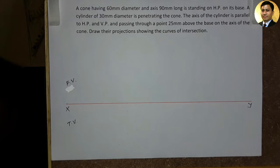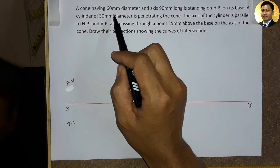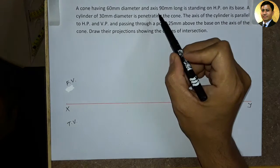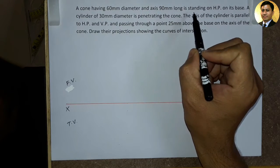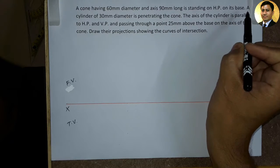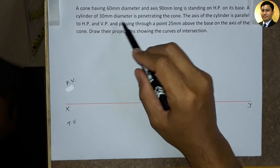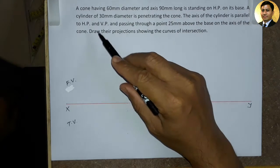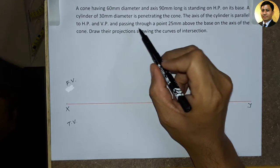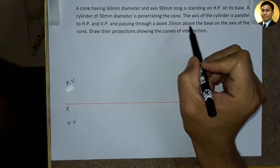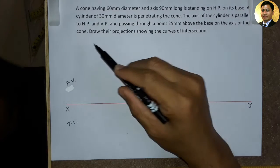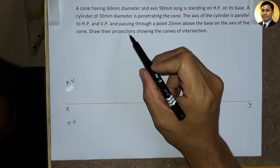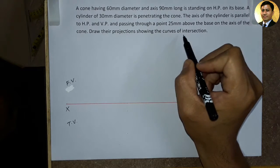Myself Niraj Patel. This video lecture mein ham intersection and penetration ka problem sikhhenge. Data is prakar hai: A cone having 60 mm diameter and axis 90 mm long is standing on HP on its base. A cylinder of 30 mm diameter is penetrating the cone. The axis of the cylinder is parallel to HP and VP and passing through a point 25 mm above the base, on the axis of the cone. Draw their projections showing the curves of intersection.